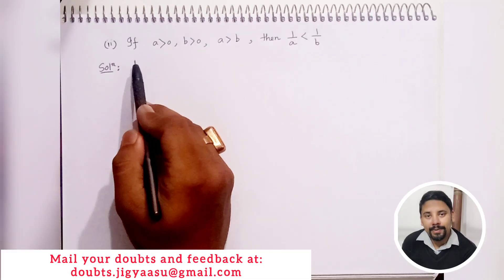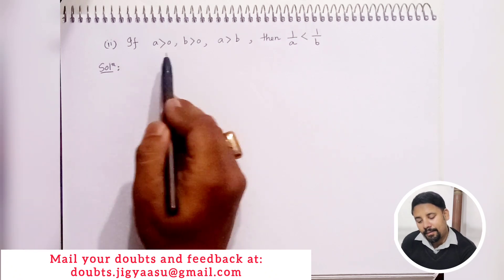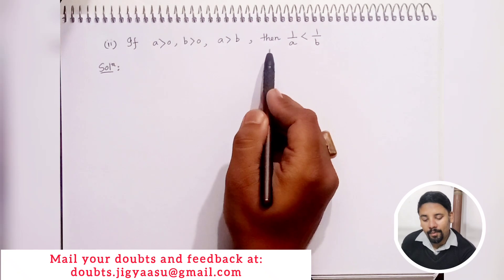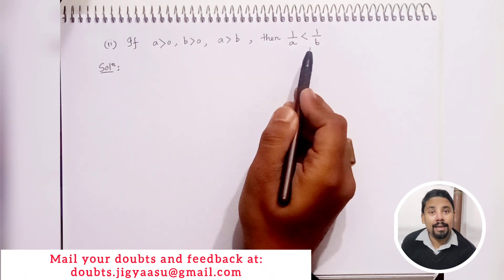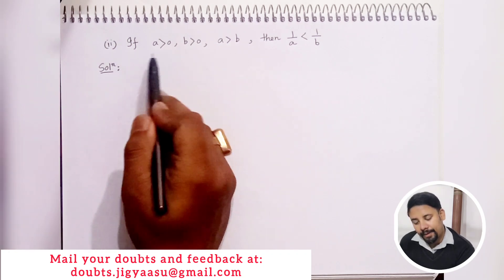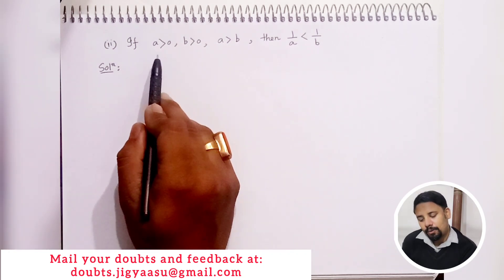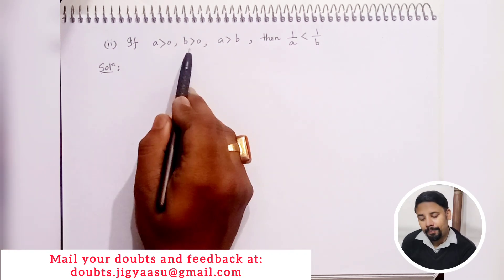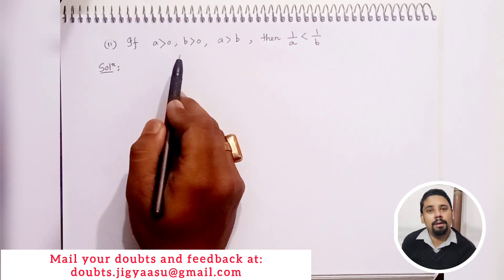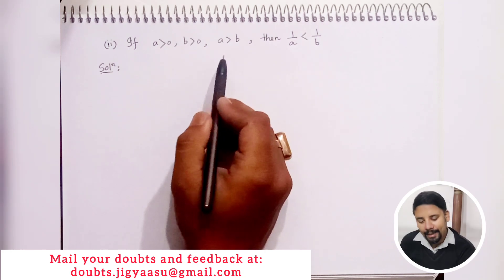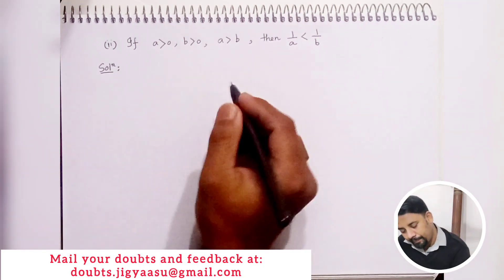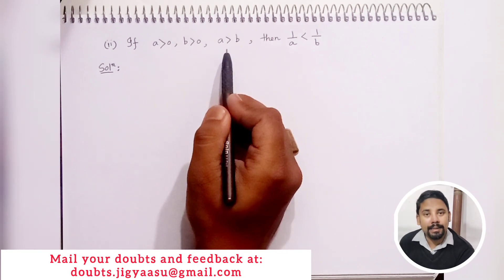Now coming to the second question: if a is greater than 0, b is greater than 0, and a is greater than b, then we have to prove that 1 by a is less than 1 by b. The given conditions tell us that a and b are both positive, and that a is greater than b. We will proceed using these conditions.